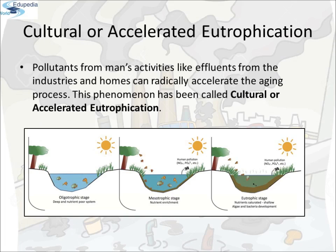Cultural or Accelerated Eutrophication: Pollutants from human activities, such as effluent from industries and homes, can radically accelerate the aging process. This phenomenon is called cultural or accelerated eutrophication. The diagrammatic representation shows three stages: first, the oligotrophic stage, where the lake is very young, deep, and nutrient-poor; then it becomes nutrient-enriched — the mesotrophic stage; and finally it becomes nutrient-saturated with shallow water, algae, and bacterial development — the eutrophic stage.